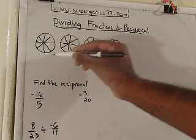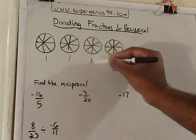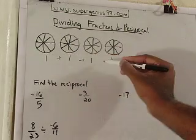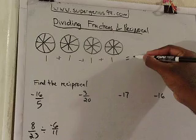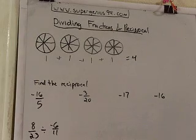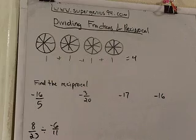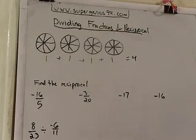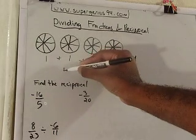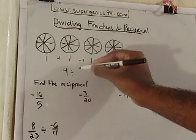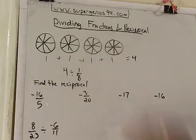So originally you had four pizzas — one, two, three, four. If you add them up, one plus one plus one plus one, that's four. So you got four pizzas. Dividing fractions — the concept is, if I divided those four pizzas into eight equal slices, how many slices do I now have? So that problem is four divided by one over eight.